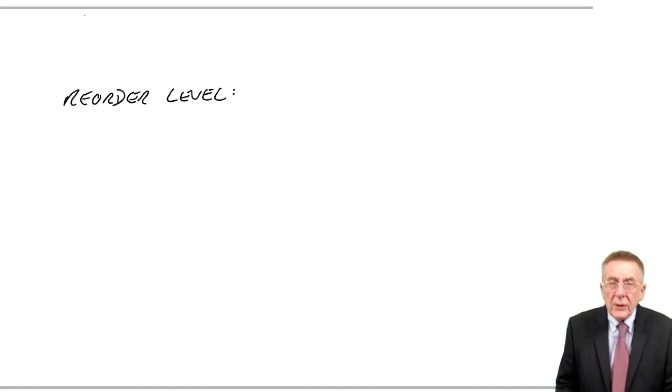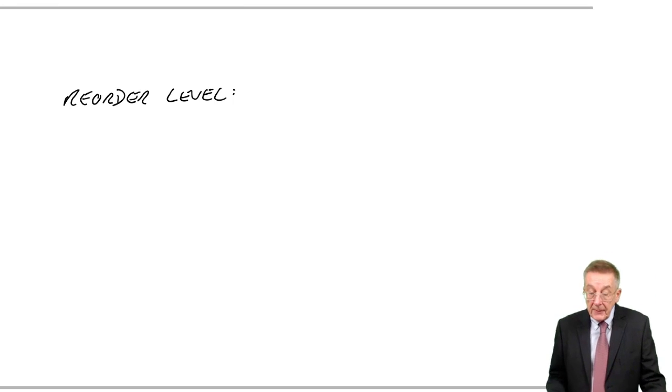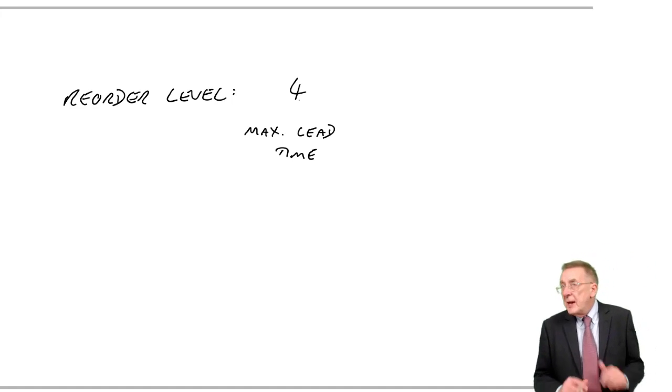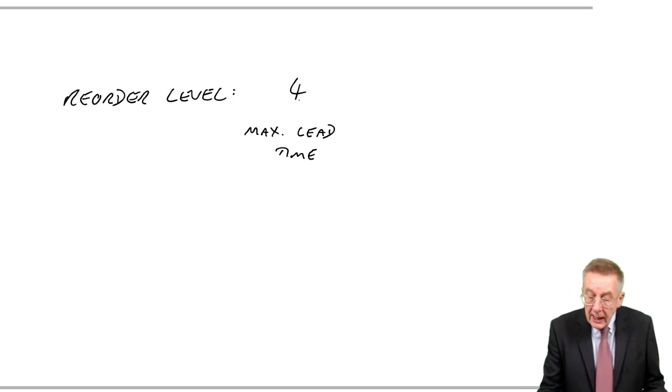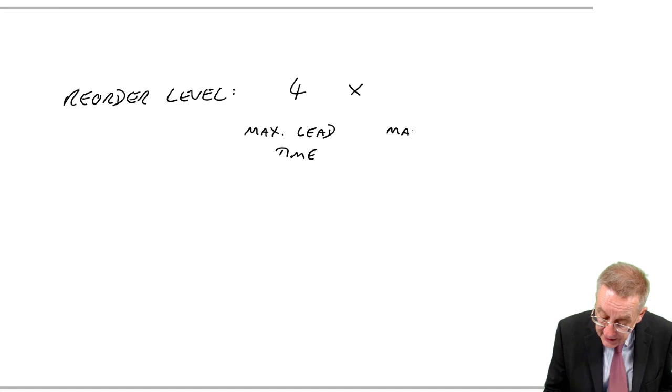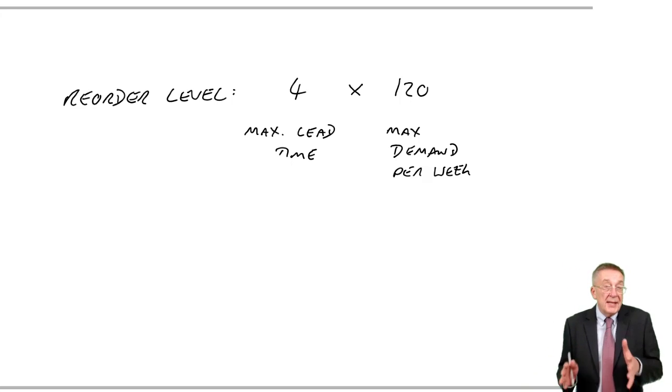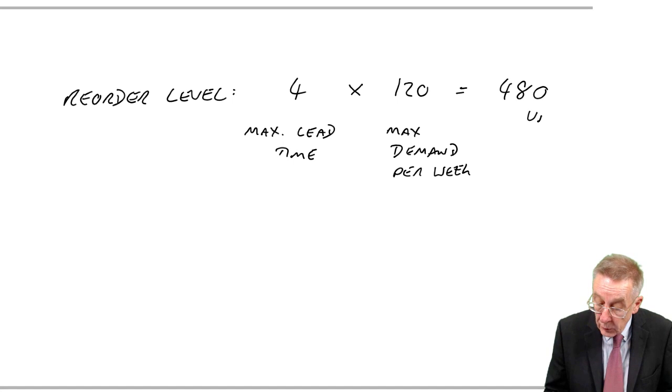Surely the reorder level, what's the worst that could ever happen? Well, as far as the lead time is concerned, the worst it could be is four weeks. So the maximum lead time, four weeks. So if we're never going to run out, whatever happens, we're going to have to make sure we have enough to last us four weeks. As far as the demand per week is concerned, again, the worst that can happen is the maximum demand per week, which is 120. And so if we want to make sure we never, ever run out of inventory, we're going to need to reorder when we've 480 units left.